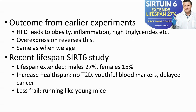This led to the next experiment where they fed the Moses mice a normal diet. They saw that the average lifespan of males was extended by 27% and that of females by 15%. Healthspan was also extended — the mice did not develop type 2 diabetes, had more youthful blood markers, and a delayed onset of cancer. The mice were also less frail: they ran further both by choice and when forced, doing as well as young mice.